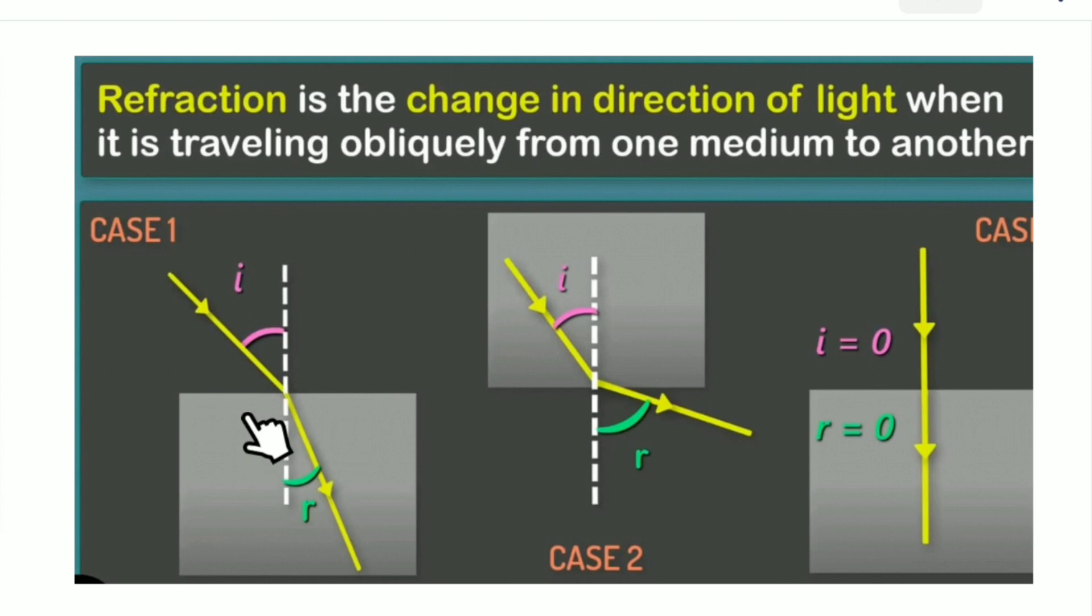In the case where light travels from a rarer medium to a denser medium, the refracted ray is bent towards the normal. Then, the angle of incidence I is greater than the angle of refraction R.